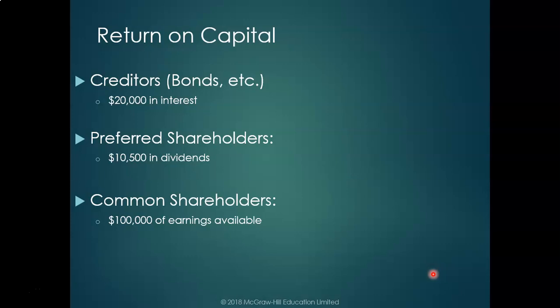We have creditors — in our case, a bond with interest of $20,000 paid every year until the bond is repaid. So every year the company returns interest to its bondholders, and at the end of the bond's term — say a 30-year bond — the company repays the principal borrowed to the bondholders.